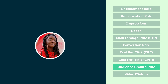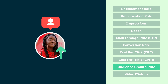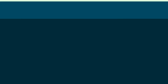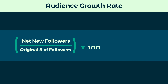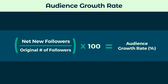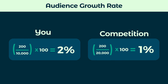Next up is audience growth rate. This metric will show you how much your following has increased or decreased over time. Calculate by taking the number of new followers gained and dividing it by your original number of followers. This is a metric you can easily apply to your competition to see how your brand is doing in comparison.